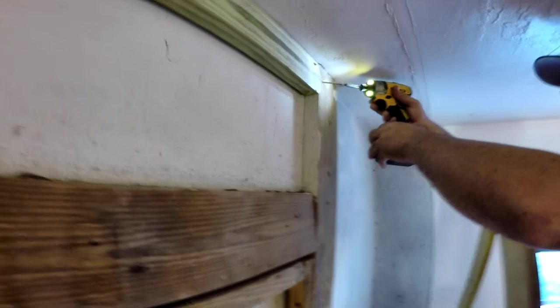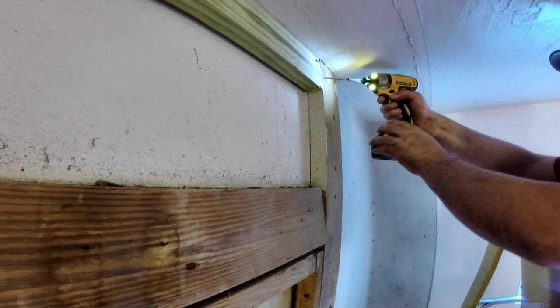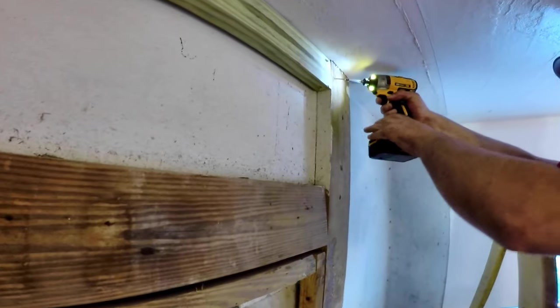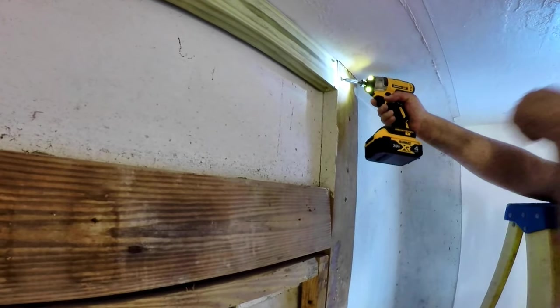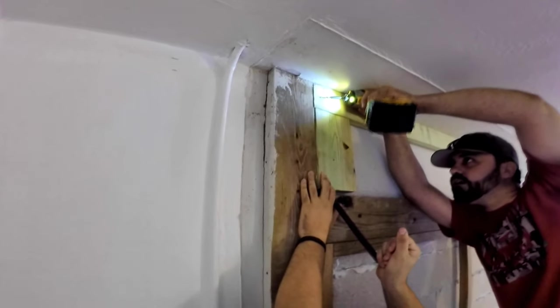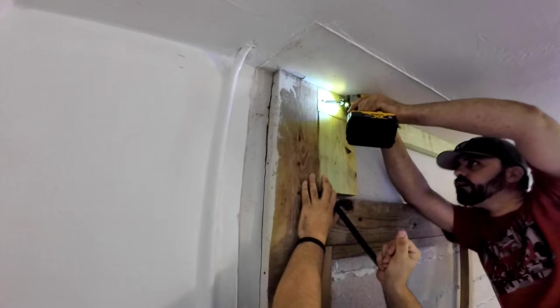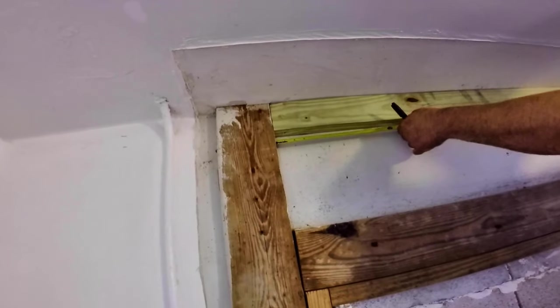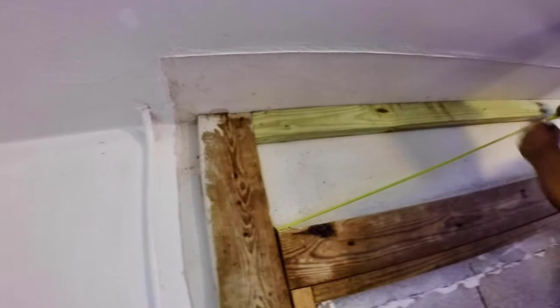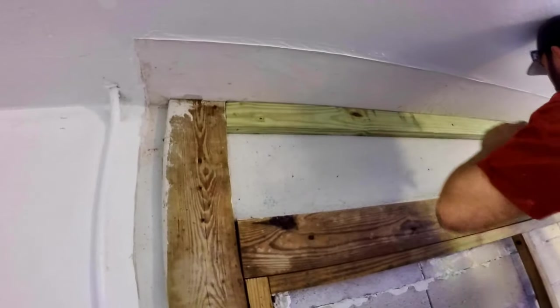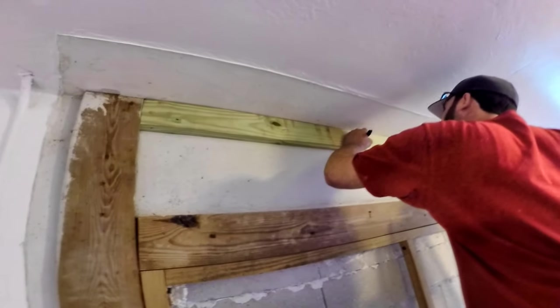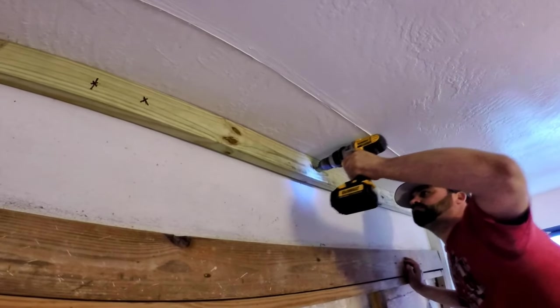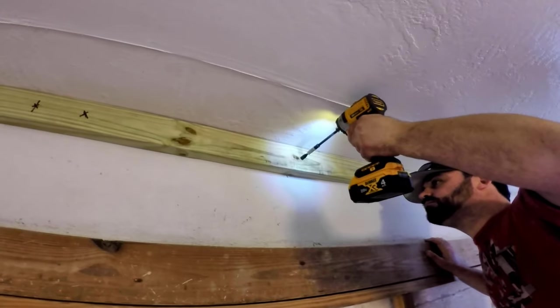We will regain most of it by doing it right. Instead of using one by two furring strips, we're using treated two by fours laying flat on the wall and screwing them to the existing two by six frame of the removed garage door, plus using tap cons to the concrete. We frame all around the wall first.